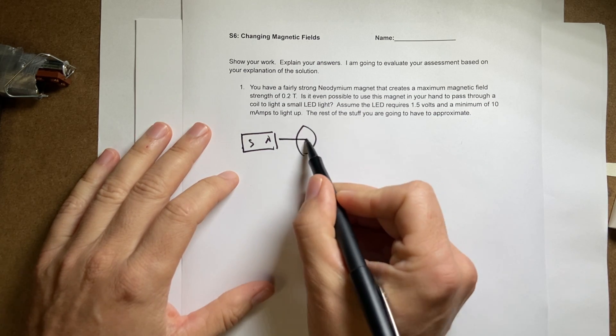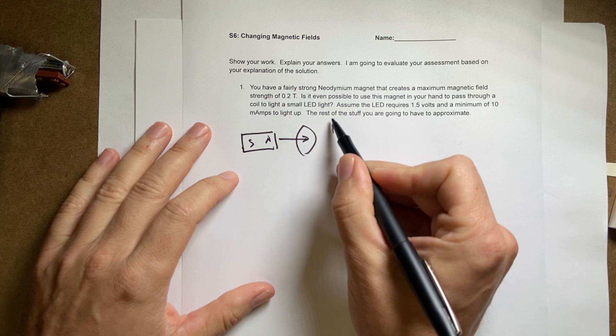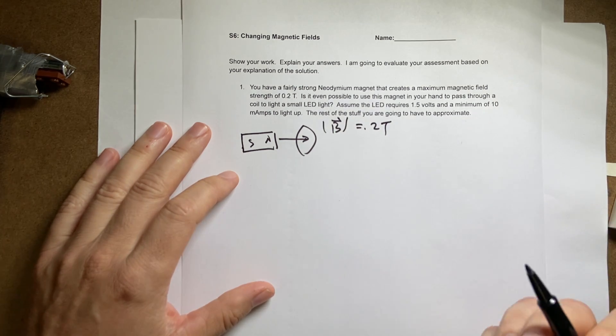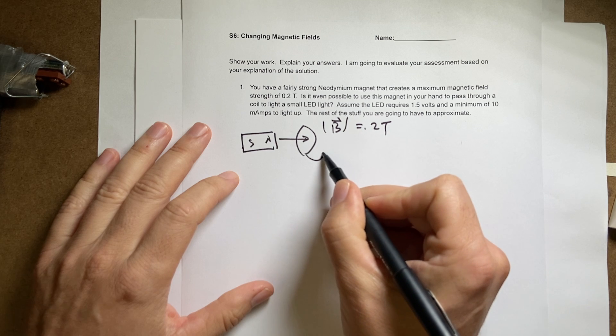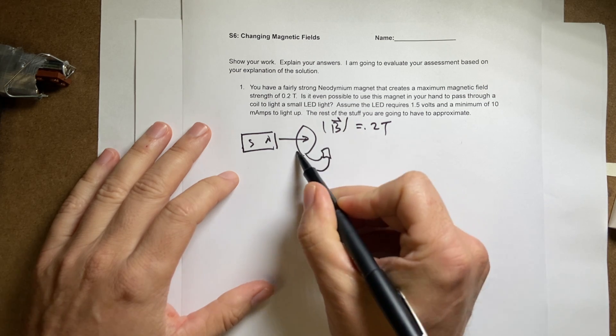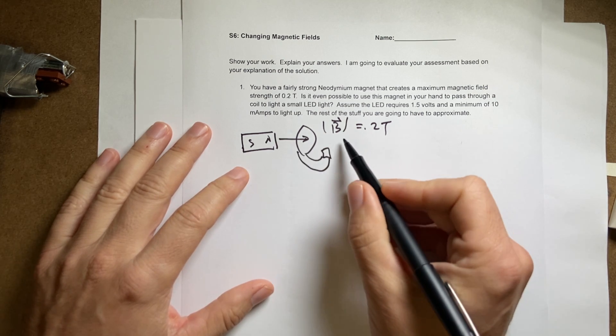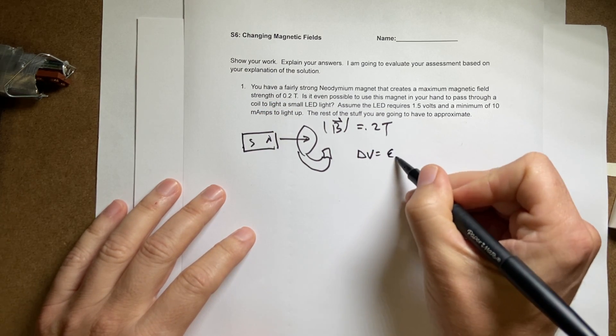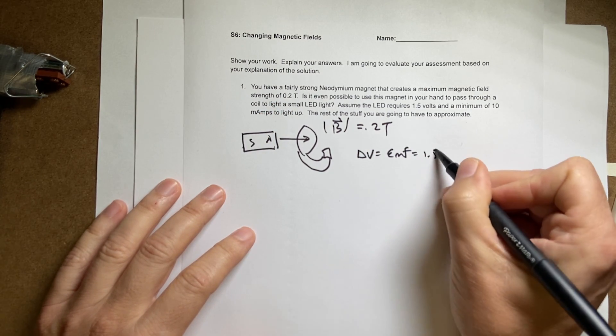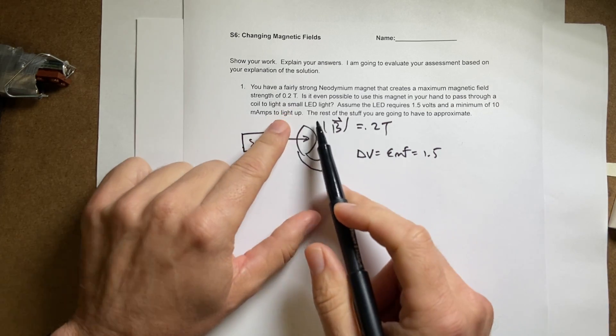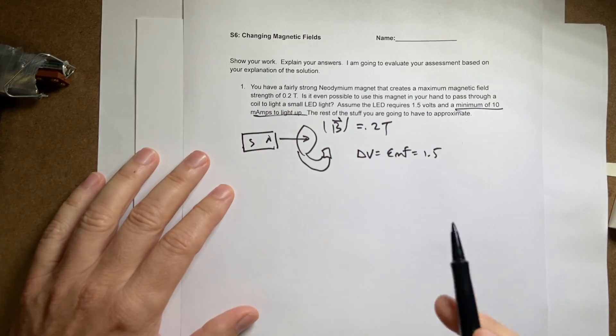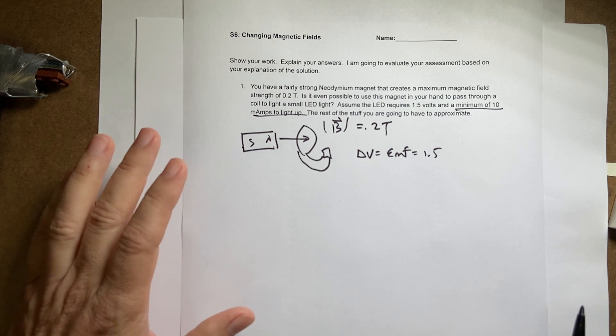And I want to, this makes a magnetic field B. The magnitude of that is 0.2 tesla, which is pretty high. This is hooked up to an LED light. There's my LED. And so I need 1.5 volts. So I need delta V equals EMF of 1.5 volts. And I need 10 milliamps. Now that one's a little bit harder. So let's just not worry about that right now.